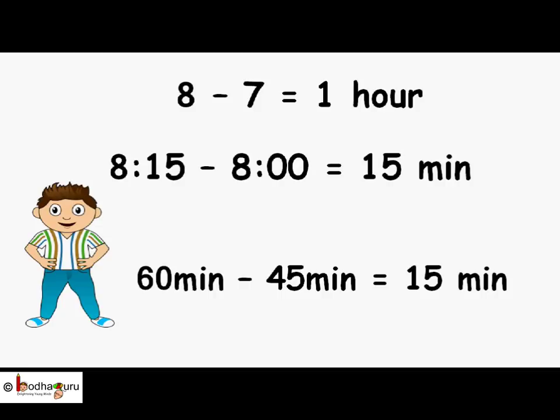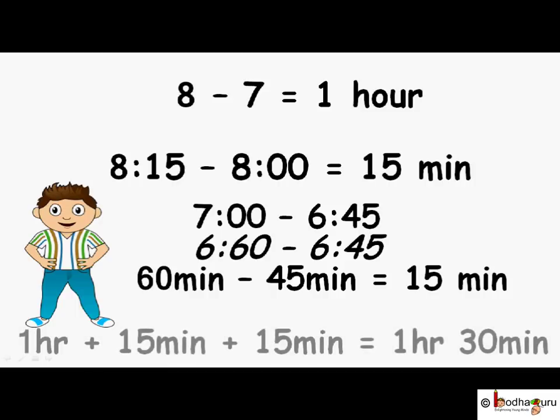So 7 can be thought as 6:60. So 6:60 minus 6:45, 6 and 6 are same. So 60 minus 45 is equal to 15 minutes. So the total comes out to be 1 hour plus 15 minutes plus 15 minutes, which is equal to 1 hour 30 minutes. So Aman has 1 hour 30 minutes to get ready.